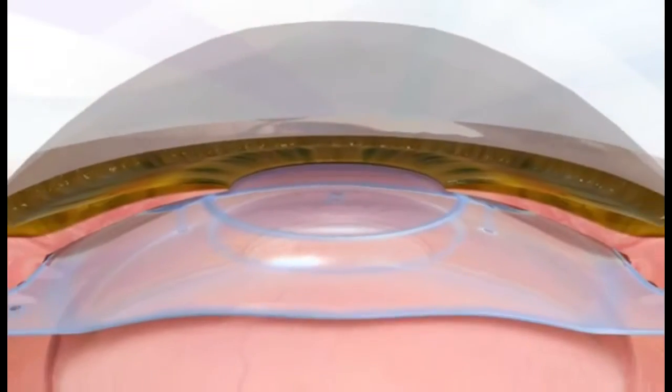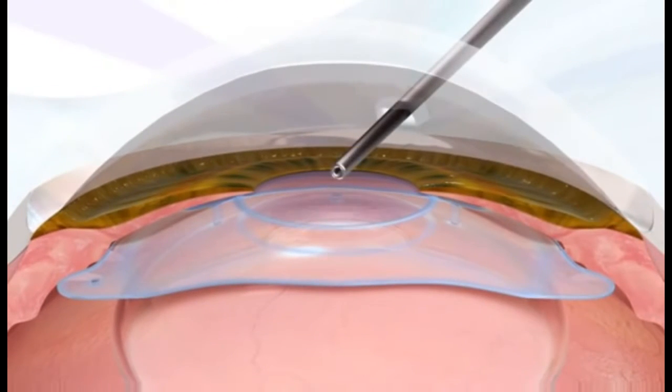As an added benefit, irrigating through the KS Aqua port to flush viscoelastic into the anterior chamber may facilitate viscoelastic removal.